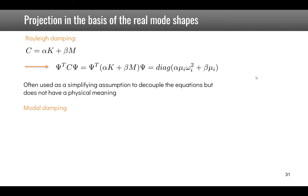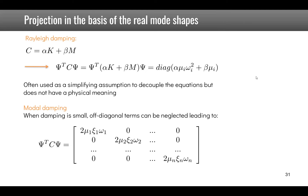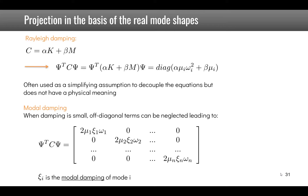Another assumption more commonly used is modal damping: when damping is small, off-diagonal terms are neglected and we keep only the diagonal terms, defined as 2·mu_i·xi_i·omega_i. Here xi_i is the modal damping of mode i, corresponding to the damping ratio defined for a single DOF system.